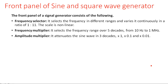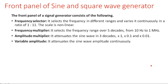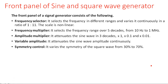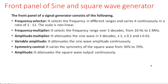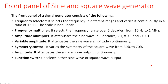The amplitude multiplier attenuates the sine wave in three decades: ×1, ×0.1, and ×0.01 — amplitude can be selected at different levels. The variable amplitude attenuates the sine wave amplitude continuously. There is also a symmetry control for the square waveform: the symmetry must be 50% for an exact square wave, and it can vary from 30% to 70%. A separate amplitude control continuously varies the square wave amplitude.